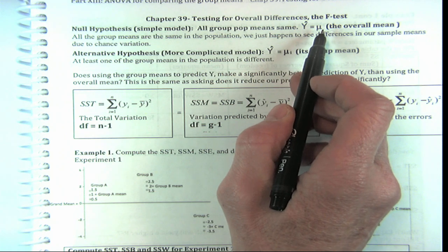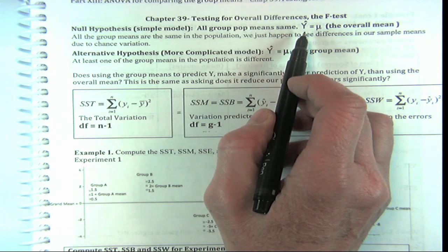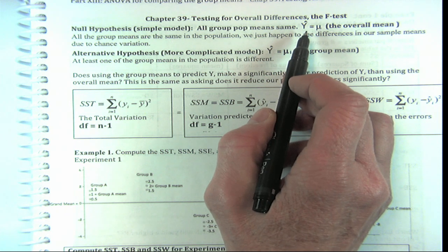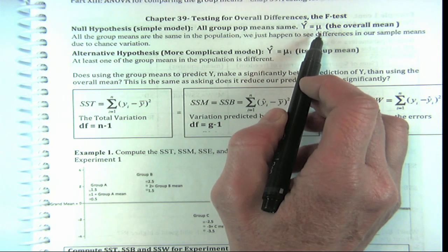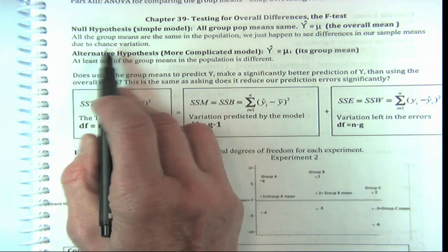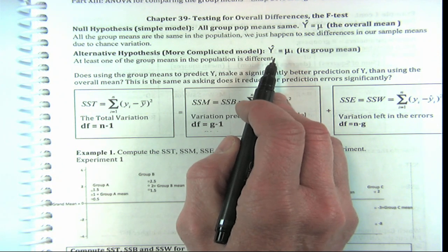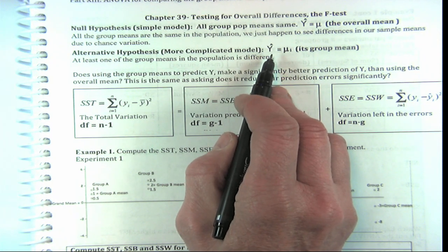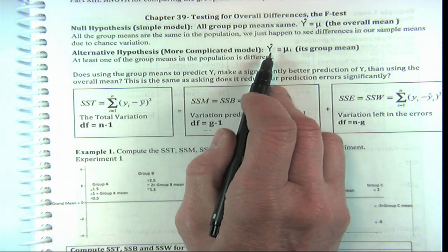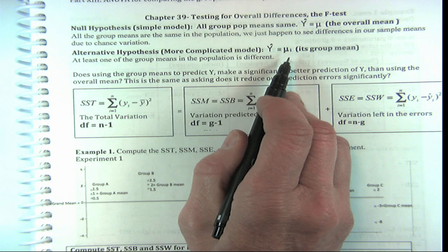All group means are the same — the same as saying our best prediction for the quantitative Y doesn't matter at all which group you're in; we're just going to use the overall mean. The overall mean of all the y's. All group means are the same in the population; we just happen to see differences in the sample means. The alternative is that they're not all the same, and we can actually make a better prediction of Y if we use the group mean.